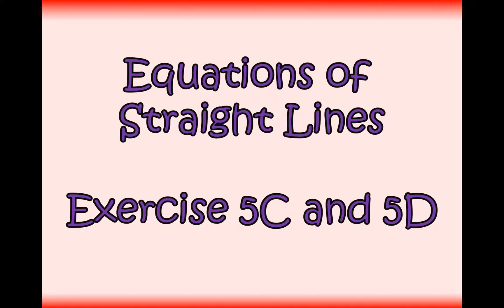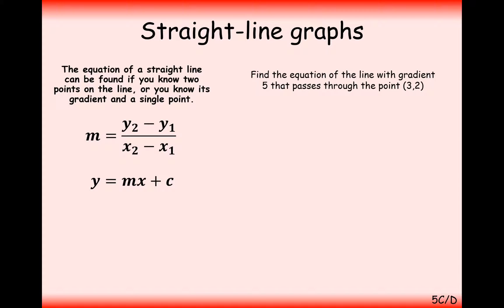Hello and welcome to this series of videos going through the A-level maths content for the first year. We're working on equations of straight lines so you can answer questions from exercise 5C and 5D. Just a little recap from the last video: the equation of a straight line looks like y equals mx plus c, where m is the gradient — for every one we go across, we go up by that gradient amount — and c is where we start on the y-axis.